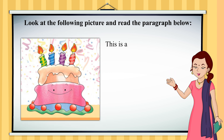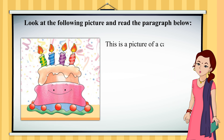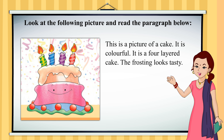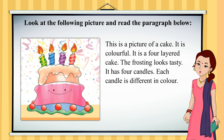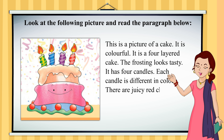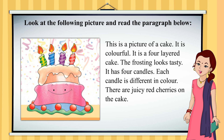This is a picture of a cake. It is colourful. It is a four-layered cake. The frosting looks tasty. It has four candles. Each candle is different in colour. There are juicy red cherries on the cake.